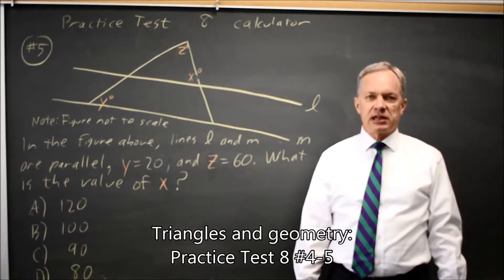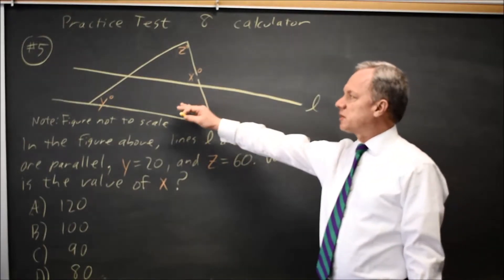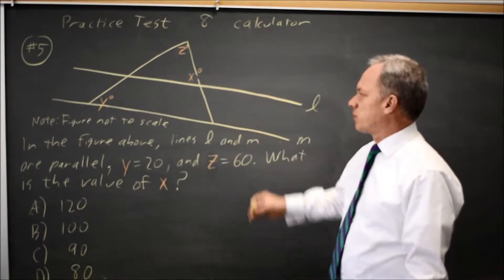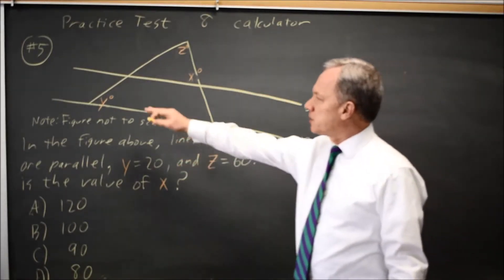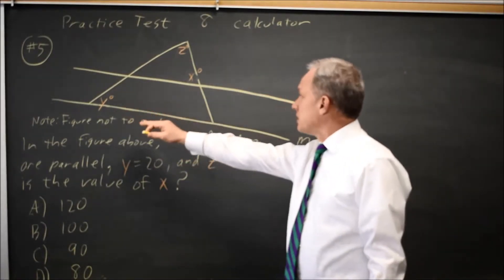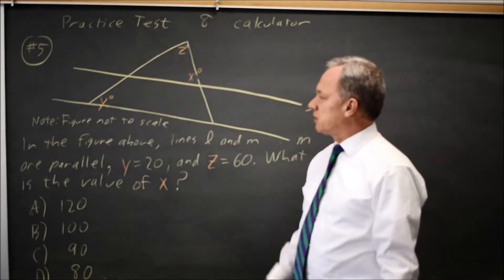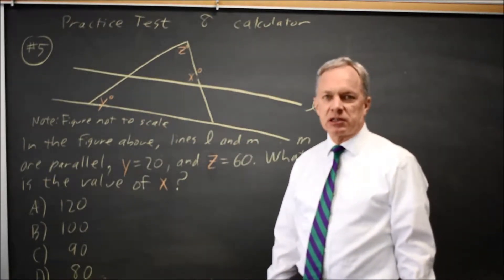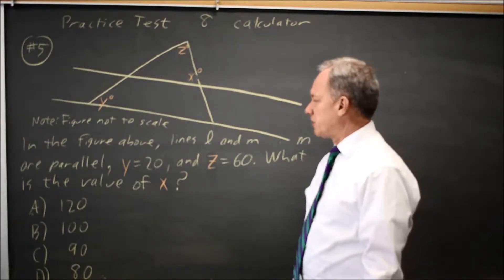This is SAT test 8, calculator, question number 5. The problem gives us a diagram, tells us that lines L and M are parallel, gives us the value of angle Y is 20 degrees, Z is 60 degrees, and asks for the value of angle X, where the picture is not to scale.